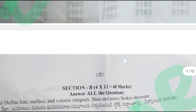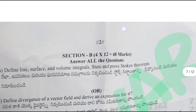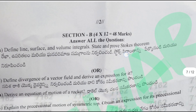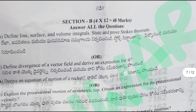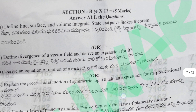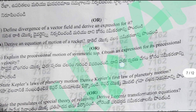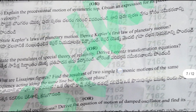Section B is also divided in the paper. We have to attempt 4 questions. Each question carries 12 marks, for a total of 48 marks in Section B.